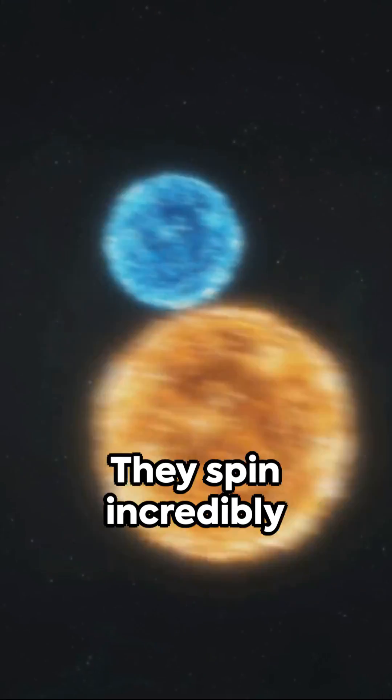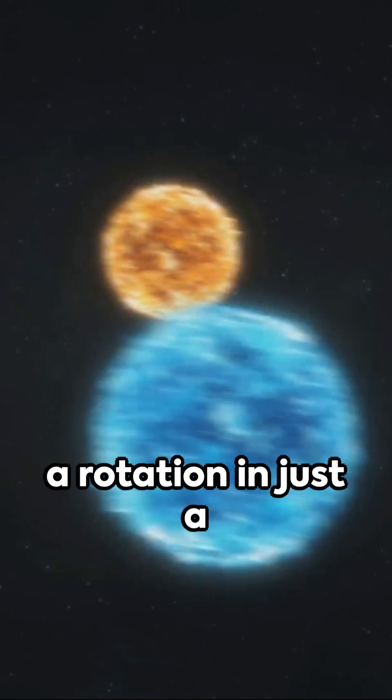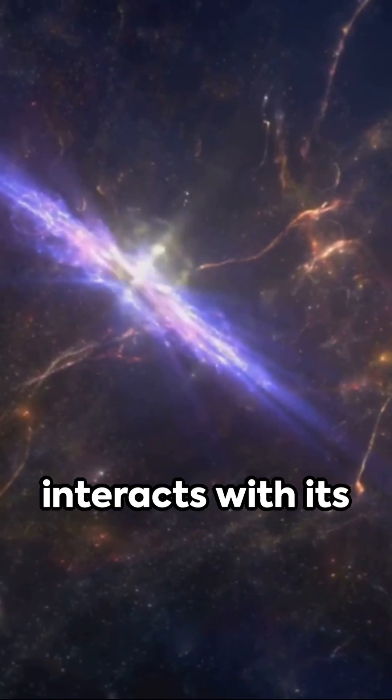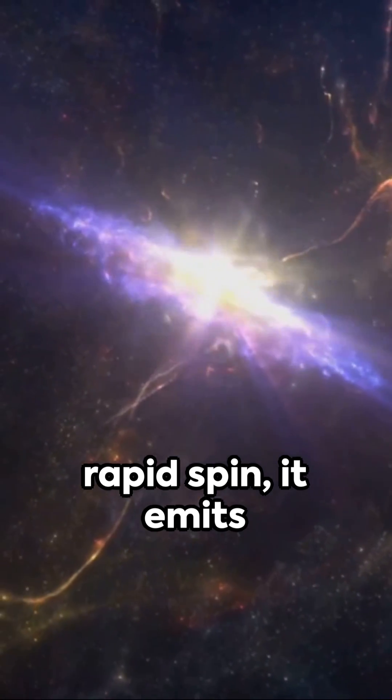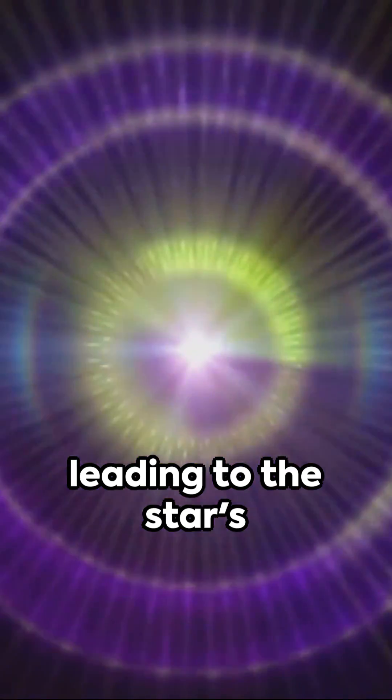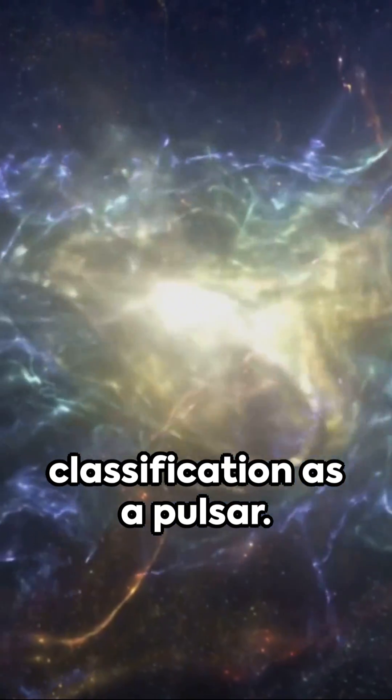They spin incredibly fast, some completing a rotation in just a fraction of a second. When a neutron star's magnetic field interacts with its rapid spin, it emits beams of electromagnetic radiation. If these beams point towards Earth, we observe regular pulses of radiation, leading to the star's classification as a pulsar.